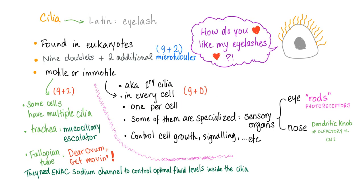Cilia is the plural; the singular is cilium — from Latin, meaning eyelash. They are found in eukaryotes. Nine doublets plus two additional central microtubules — we call this nine plus two. They could be motile or immotile. Immotile is known as primary cilia, found in every cell — one cilium per cell. Some of them are specialized in sensory organs, such as the eye. They are the rods. And in the dendritic knobs of the olfactory nerve, which is cranial nerve number one.